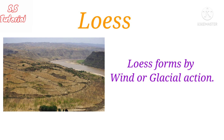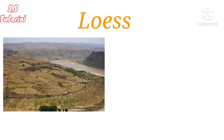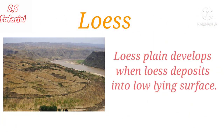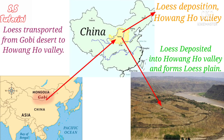Glaciers may also be responsible for the formation of loess. When loess is deposited on a low-lying surface and forms a plain, it is called a loess plain. A well-known loess plain developed in the valley of the Huangho River in China, formed by the accumulation of loess transported by wind from the Gobi desert.